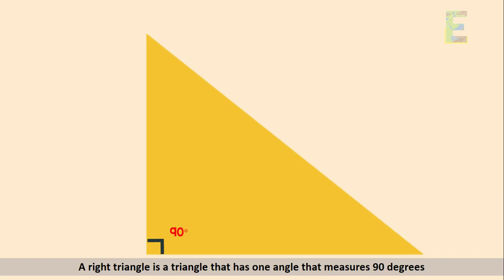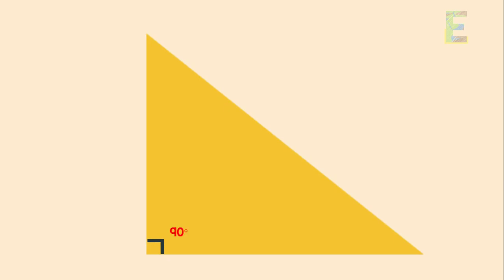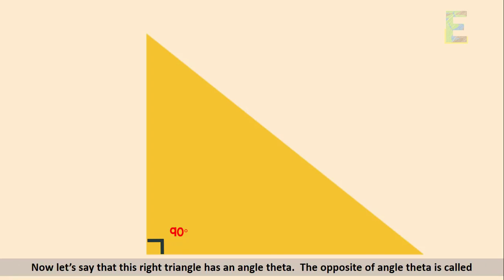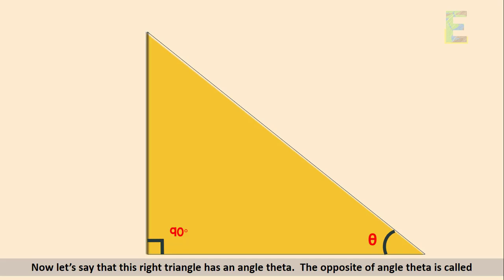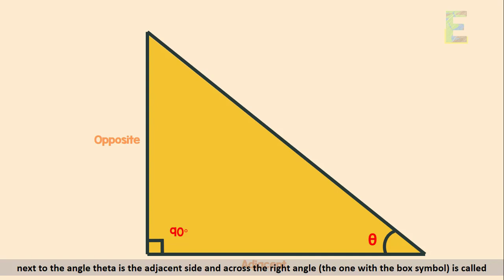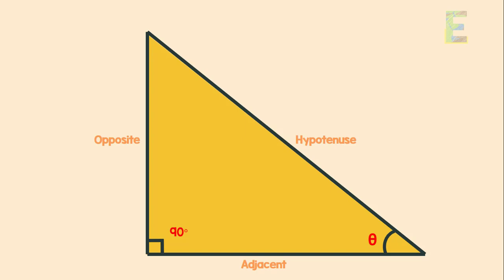A right triangle is a triangle that has one angle that measures 90 degrees. There are some parts of the right triangle we need to know when dealing with trigonometry. If the right triangle has an angle theta, the side opposite to theta is called the opposite side, the side next to theta is the adjacent side, and across the right angle — marked with the box symbol — is the hypotenuse, which is also the longest side.